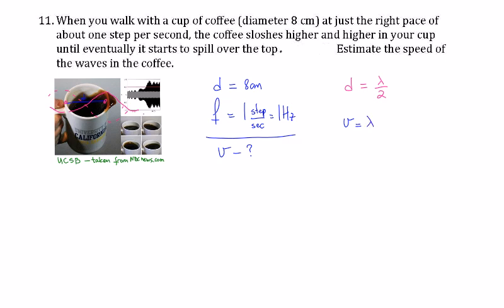Frequency we already know, and then we can find the lambda from the top equation. Lambda equals two times d, and plug this one into here. We'll get v equals two d times the frequency.